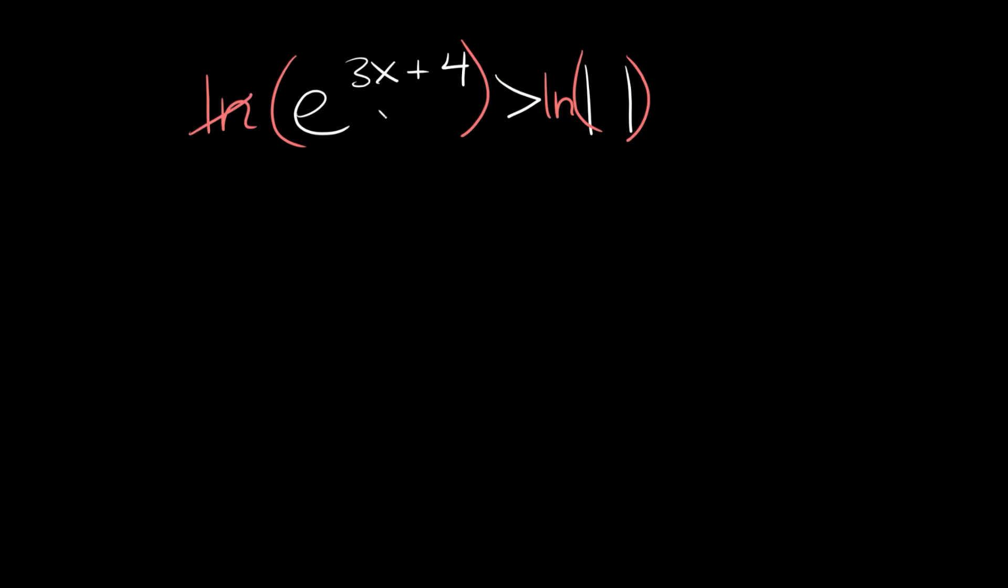So then on this side the natural log and the e cancel out, and then again we're just left with whatever is in the exponent. So this time we have 3x plus 4, and that's greater than the natural log of 11.